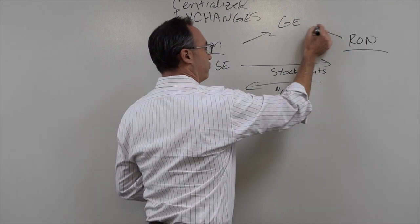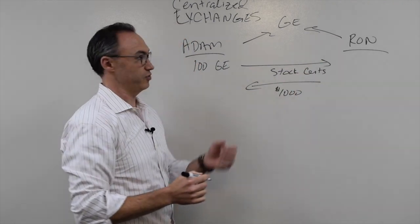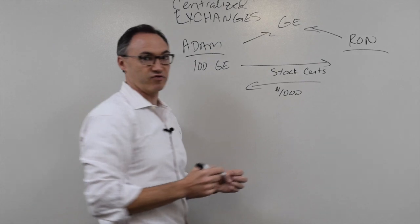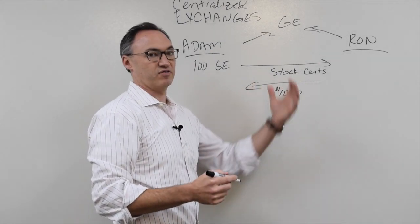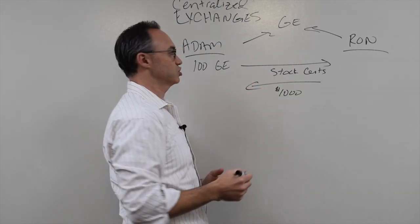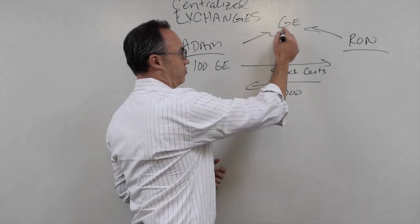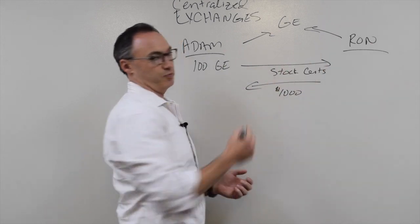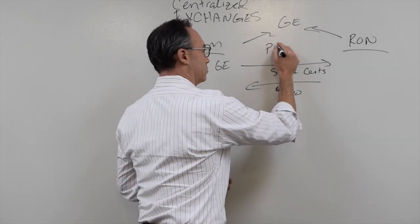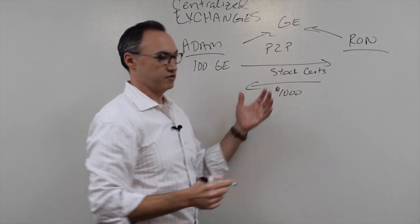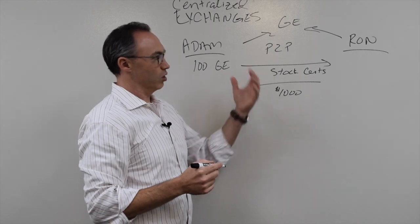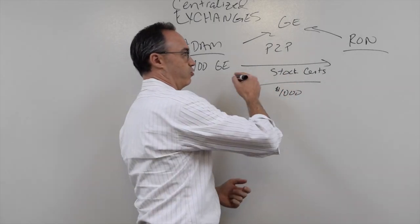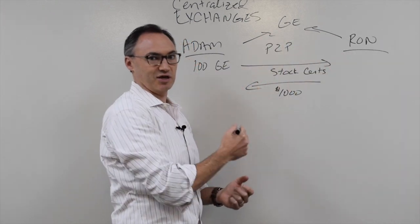Adam and Ron also have to notify GE, or the transfer agent, that Ron is now the owner, so that GE can send Ron information, send him dividends, and ask him about voting and such. This is what we call a peer-to-peer transfer of stock. At one point this might have been viable, but as we've said before, this relationship and this transaction does not scale.